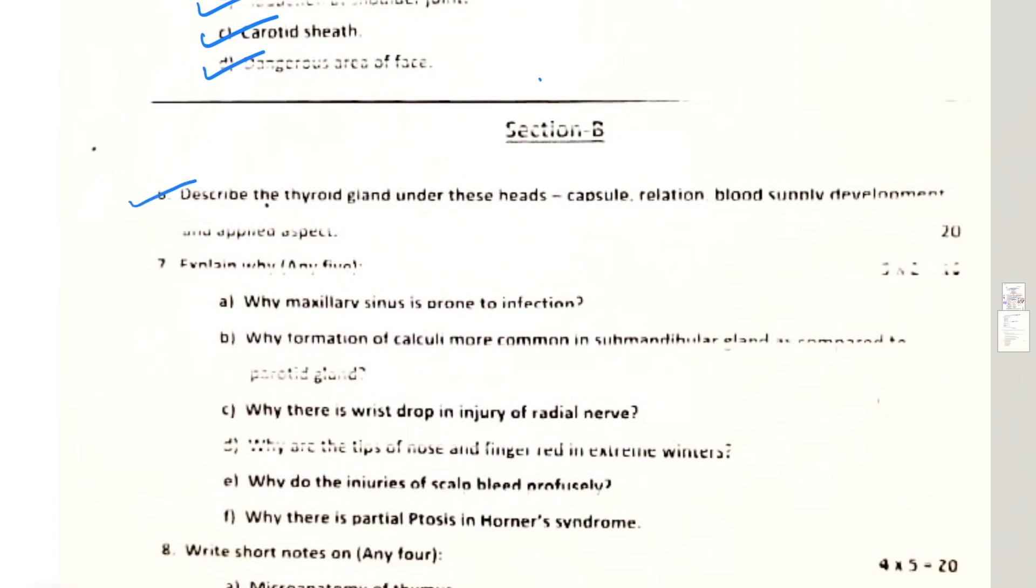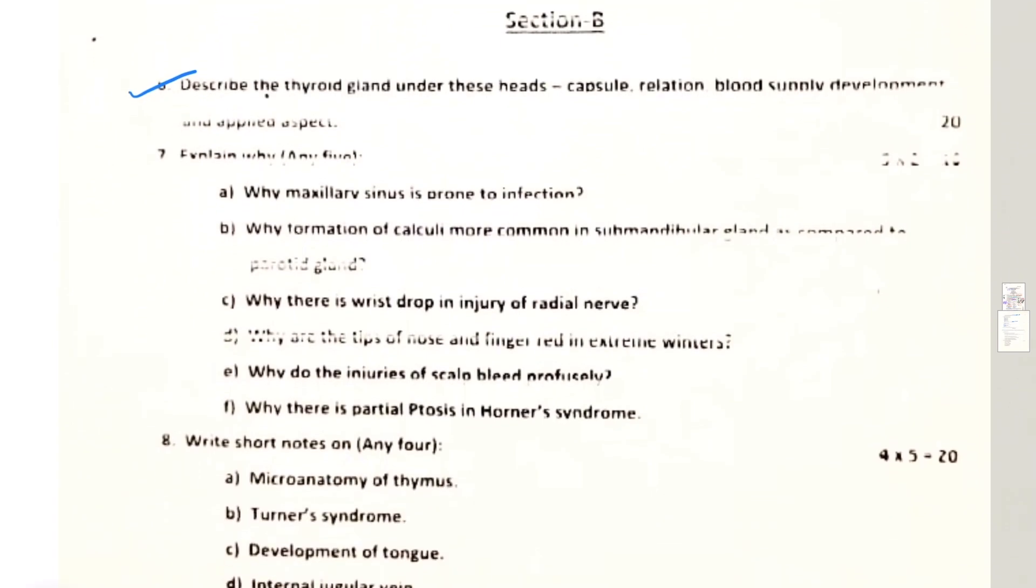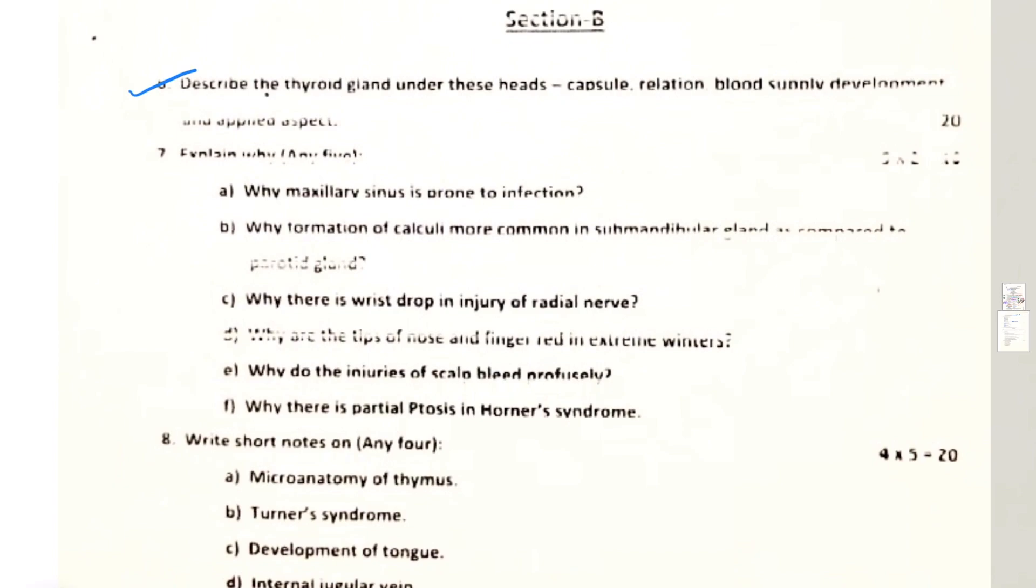Section B was a long question of 20 marks that includes: describe thyroid gland under these headings - capsule, relation, blood supply, development, and applied aspect. Question 7 is: explain why - you have to explain any five. Why maxillary sinus is prone to infection? Simple reason: maxillary sinus is such a sinus where the ostium is not at the level of the floor, it's at the higher level and it opens into the middle meatus of the nose.